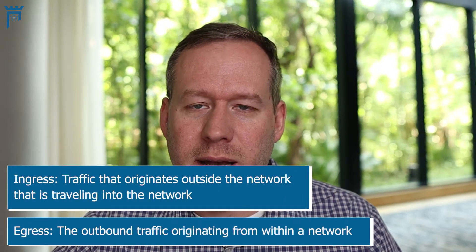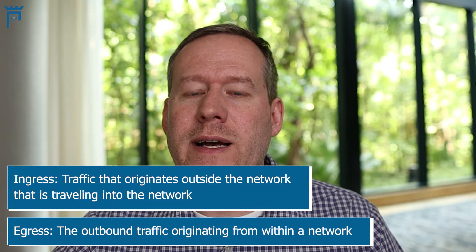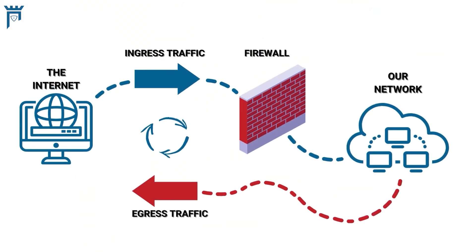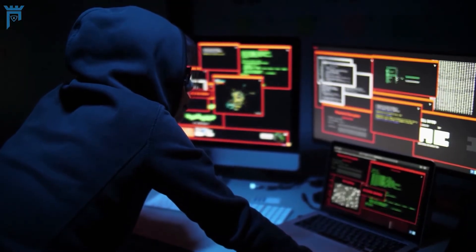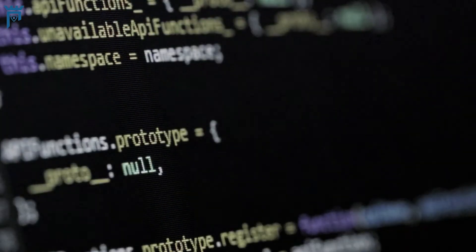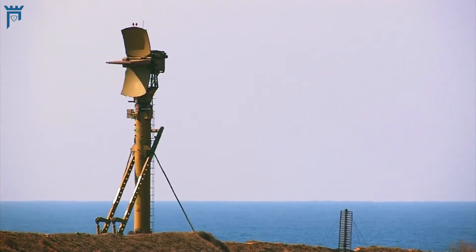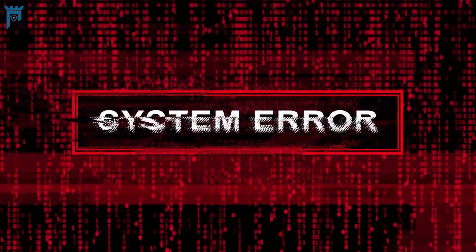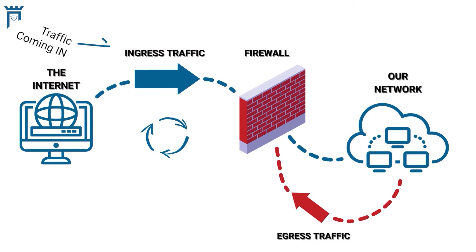A good practice — not called out specifically in the control — is to apply this for both ingress and egress. A lot of organizations feel that since they're already inside their network, they'll have a very generous egress policy. But egress is a way that attackers are able to beacon out, exfiltrate information, and communicate with malware or systems under their control. So it's best practice to apply this to both traffic coming in and traffic going out of the environment.